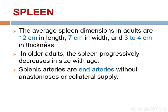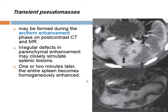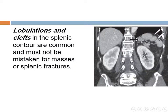The average spleen dimensions in adults are 12 cm in length, 7 cm in width, and 3 to 4 cm in thickness. In older adults, the spleen progressively decreases in size with age. The splenic arteries are end arteries without anastomosis or collateral supply. During contrast study of the spleen, in the arterial phase the spleen appears heterogeneous, becoming homogeneous on delayed phase — this causes transient pseudomass. One to two minutes after contrast, the entire spleen becomes homogeneously enhancing. Lobulation and clefts of the splenic contour are common and must not be mistaken for masses or splenic fracture.